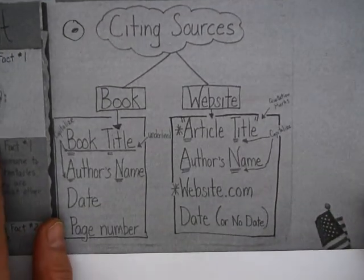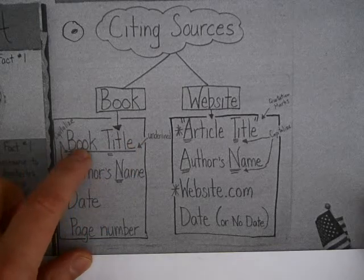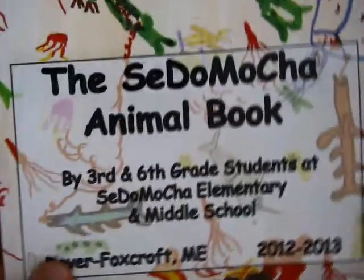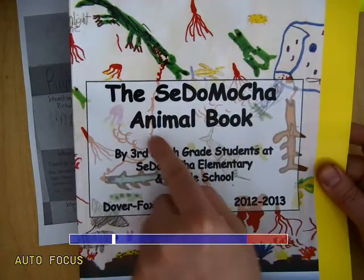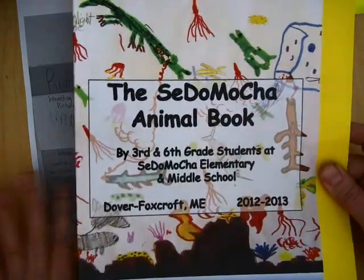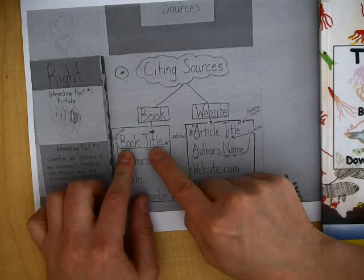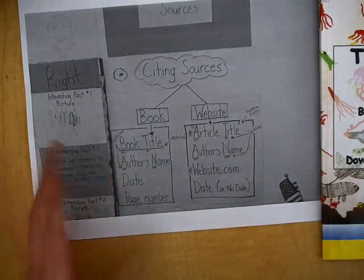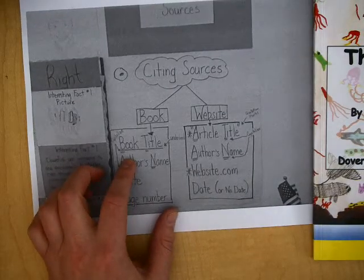The key things we're going to look at are making sure you have a book title — the title of the book, which is usually found right on the cover. I've got an example right here. This is a book I did with my class a couple years ago — it's called the Setomocha Animal Book. You want to make sure that you underline that title, because when you're writing the title of a book, you've got to underline it. You'll see it's also underlined right up there on the anchor chart.